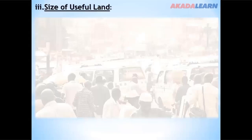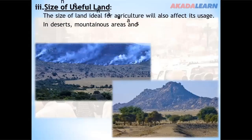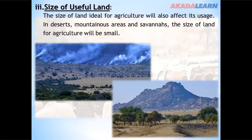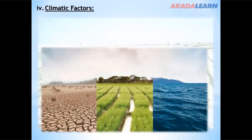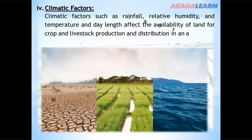Size of useful land. The size of land ideal for agriculture will also affect its usage. In deserts, mountainous areas and savannas, the size of land available for agriculture is very small. Climatic factors such as rainfall, relative humidity, temperature and day length affect the availability of land for crop and livestock production and distribution in an area.